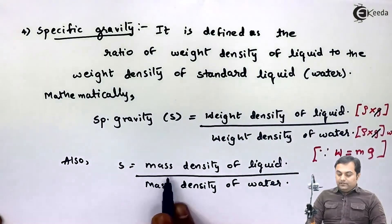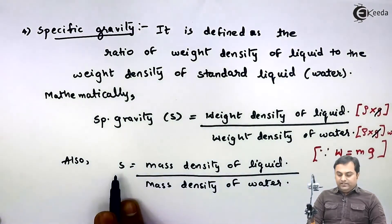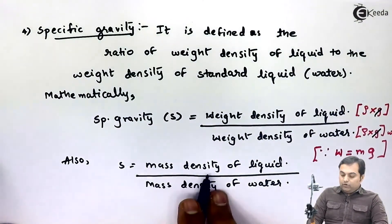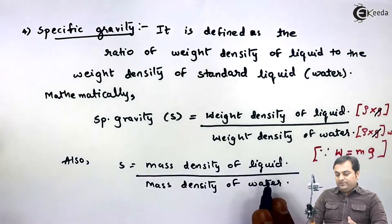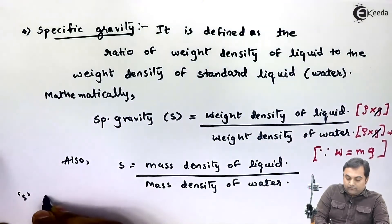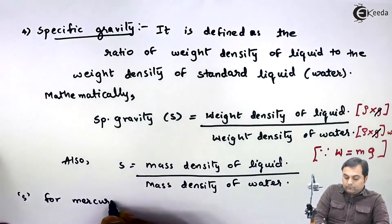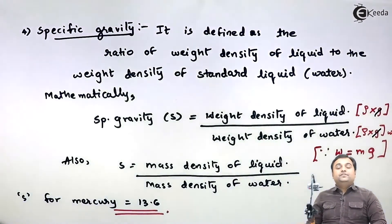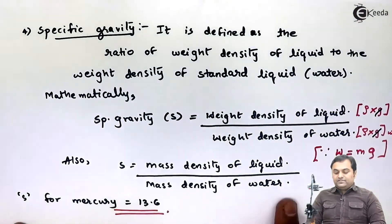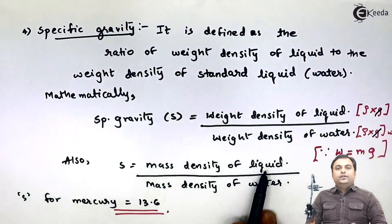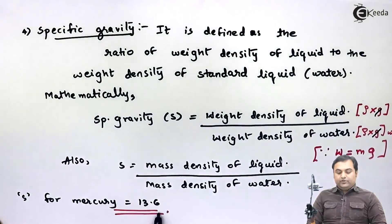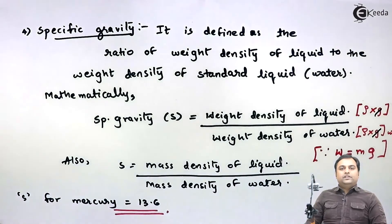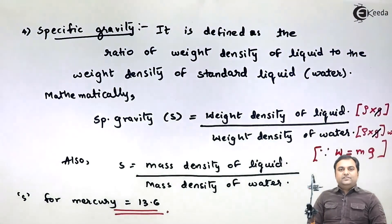For example, if the liquid is mercury, the specific gravity of mercury is 13.6, meaning mercury is 13.6 times heavier than water. The mass density of water is 1000 kg/m³, so the mass density of mercury is 13,600 kg/m³. In this video we have seen properties commonly used in fluid mechanics: mass density, weight density, specific volume, and specific gravity. I hope everything is clear.